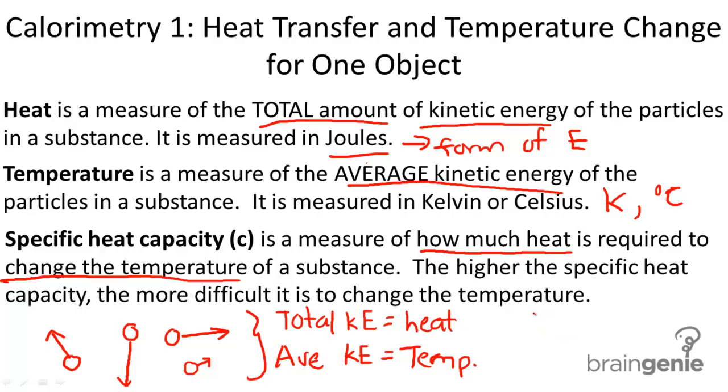For example, let's look at the example of water. Water has a high C, a high specific heat capacity. This means that you have to add a lot of heat to water in order to change the temperature.